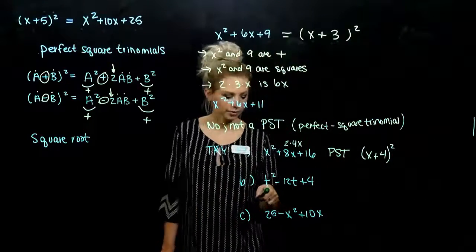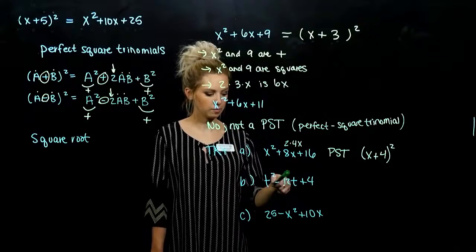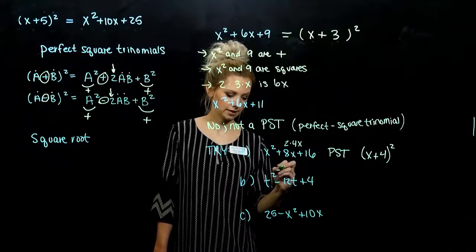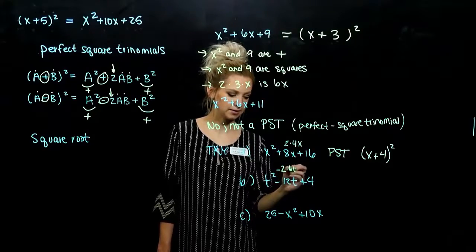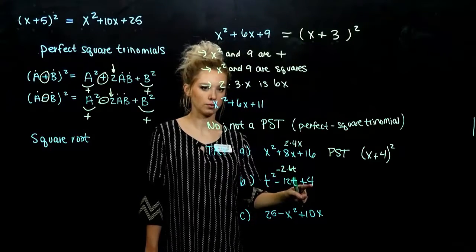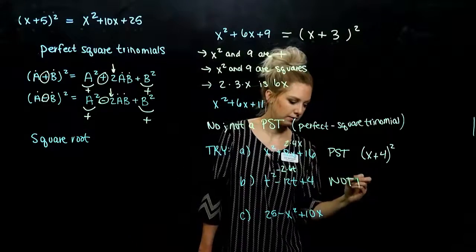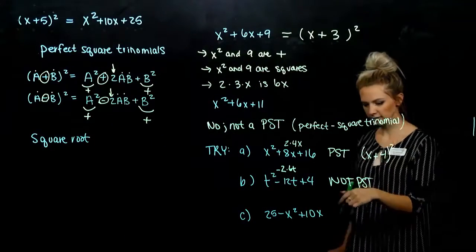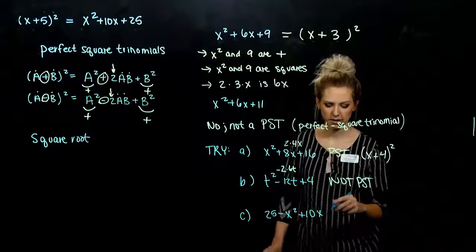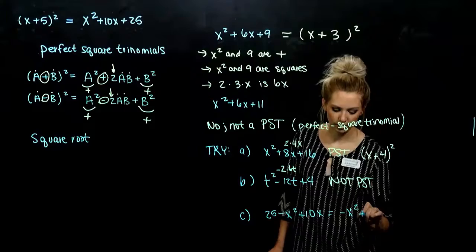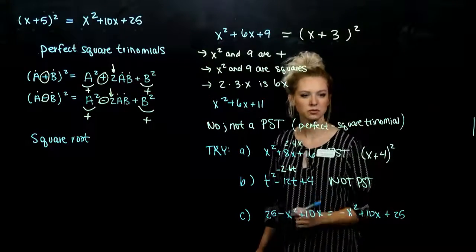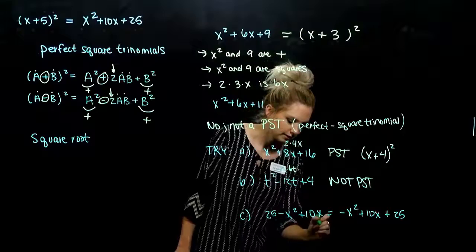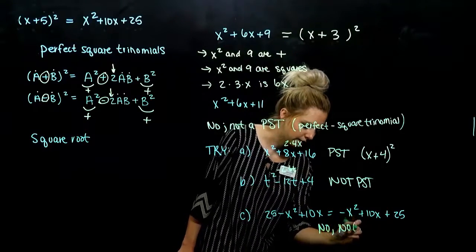Next: perfect square, perfect square, and they're both positive. Can I break up the middle term into 2 times the square root and the square root? If I take negative 2 out of 12, I'm left with 6t. But 6 is not the square root of 4. So no — not a perfect square trinomial. For part c, we need to rewrite it: negative x squared plus 10x plus 25. Right off the bat, I've got a negative first term — automatically not. It needs to be positive. So no, not a perfect square trinomial.